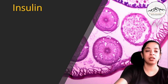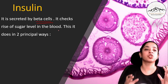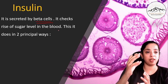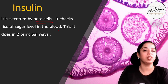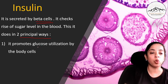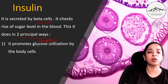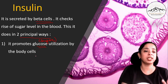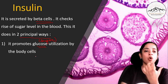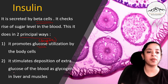First let's talk about insulin. Insulin is secreted by beta cells. It checks the rise of sugar level in the blood — it doesn't allow the sugar level to increase. So whenever there is an increase in sugar level, insulin is secreted. It does this in two principal ways. The first way: it promotes glucose utilization by the body cells — it tells the body cells to absorb more and more glucose and use it.